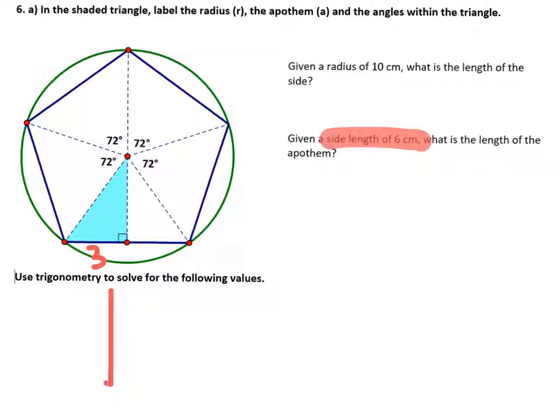So again, just to kind of maybe draw our picture again, we have a 36 up in this angle. We have a 90 here and then a 3 here. And again, we're going to find, in this case, all we need is our apothem.